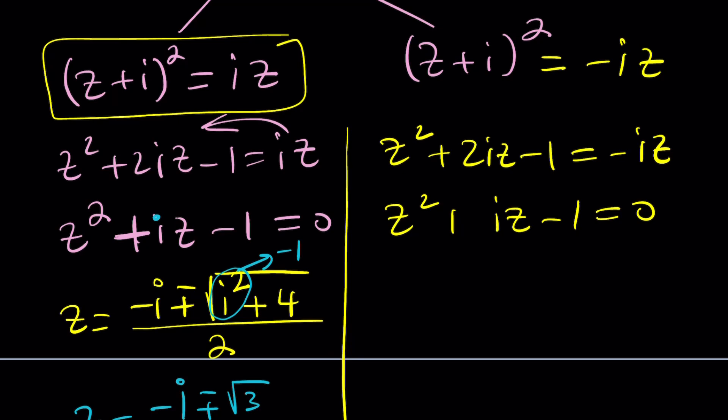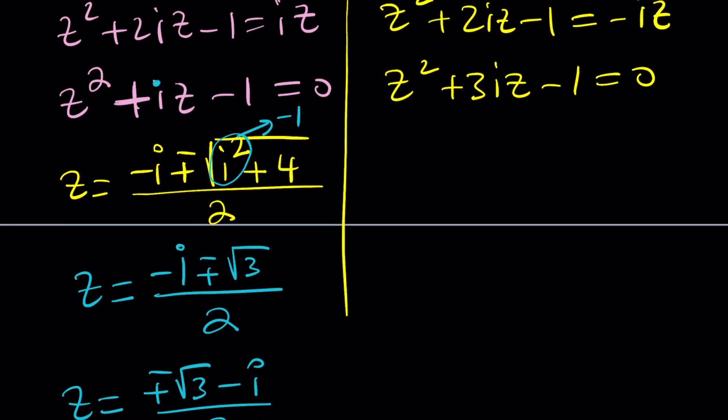And if you try to solve this using the quadratic formula one more time, you're going to get negative B, which is negative 3I, plus minus the square root of 3I squared, which is 9I squared, minus 4AC, again, which is plus 4, divided by 2.